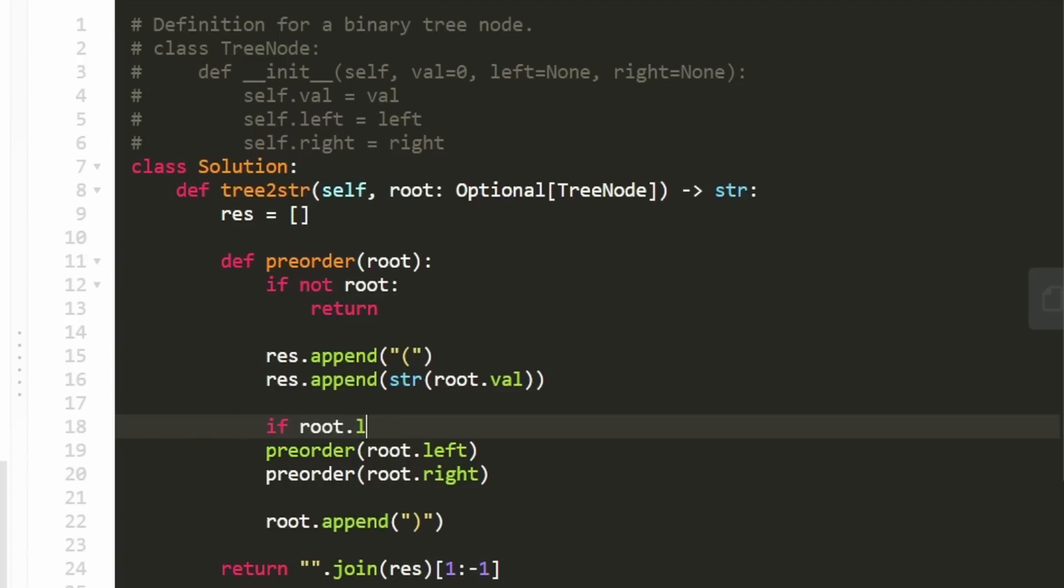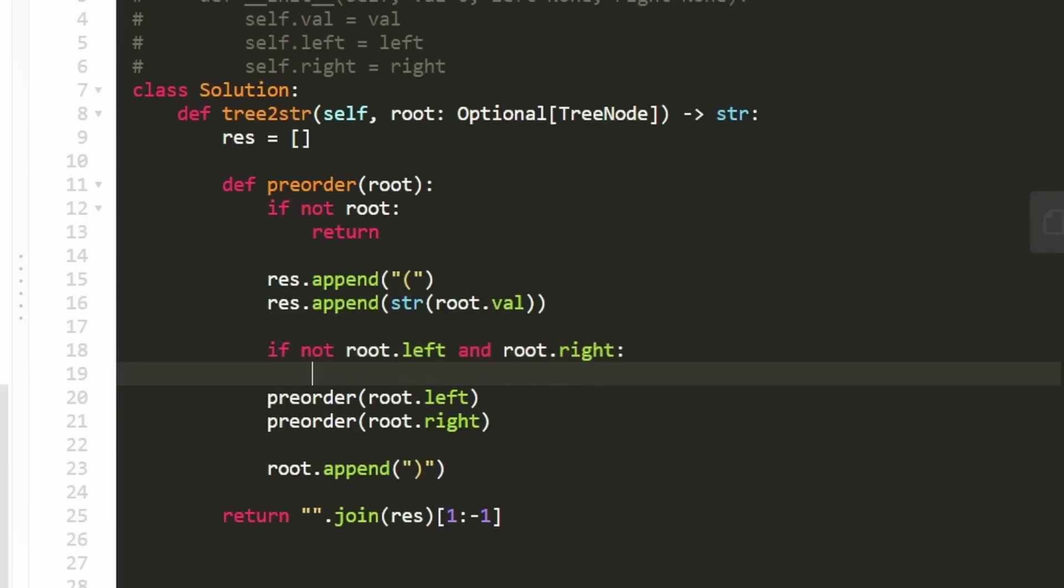We can say if root.left is null, so not root.left, and root.right is non-null, then we can simply say result.append a pair of parentheses. So we're doing this. We're adding that pair of parentheses only when we need to. And then we're still running preorder on left and right. I mean, technically, if this does execute as true, we would not need to execute this line of code, but I'm just leaving it like this for simplicity. So in that case, this preorder traversal would just immediately return, but this preorder traversal would still end up adding that right subtree.